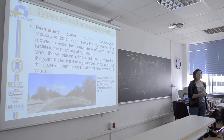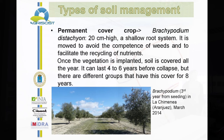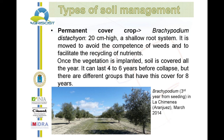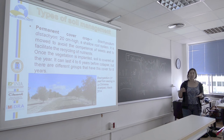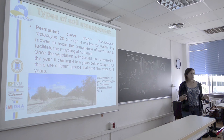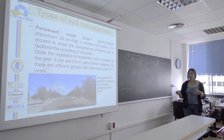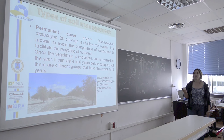A special case is a permanent cover crop with Brachypodium distachyon, which is a proper frost-resistant crop. It's a small plant, only 20 centimeters high, with a solid root system. It's designed to avoid competition with wheat and to facilitate nutrient recycling. In July or August when there's no water, the plant dies by itself — so it's a very good cover crop. Once the vegetation is implanted, it covers the soil all year.